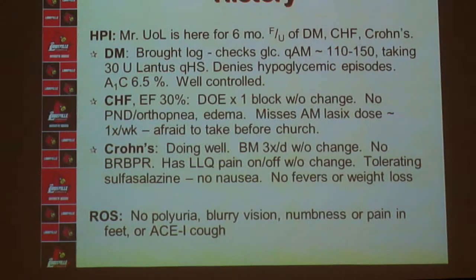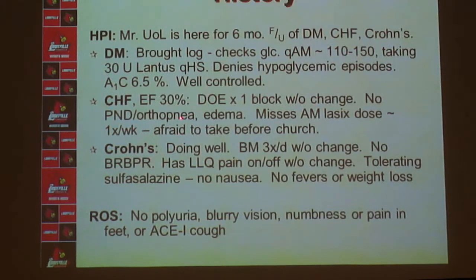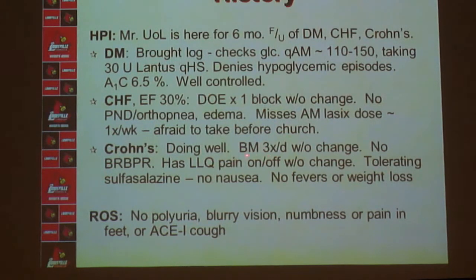For heart failure, you assess the ejection fraction, baseline exercise tolerance — this patient is dyspneic at one block but no change — no PND, orthopnea, or edema. You also assess medication use; he's not taking his Lasix on Sunday mornings before church. For Crohn's disease, you assess bowel habits, abdominal pain, and any side effects from his medications.